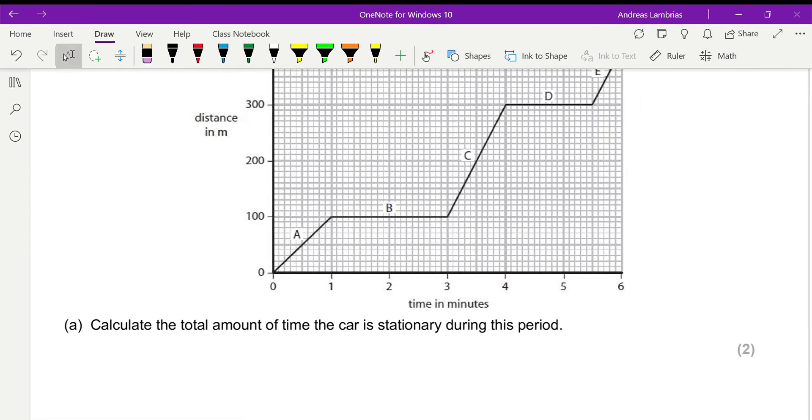The first part is asking us to find the total amount of time the car is stationary during this period. Stationary will be represented with horizontal lines. At one minute it was at 100 meters, at two minutes it was still 100 meters, at three minutes the distance was still 100 meters, therefore it didn't move.